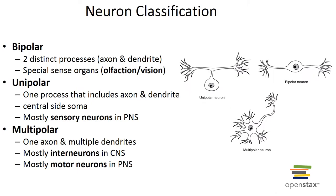There are different types of neuron classification based on structure or the number of cell processes. Bipolar neurons have two cell processes — one dendrite and one axon — and are rare, occurring in the retina of the eye and within the nasal mucosa. Unipolar neurons have dendrites and axon continuous and fused, with the cell body located off to the side; most sensory neurons of the PNS are unipolar. Multipolar neurons have one axon and two or more dendrites — these are the most common neurons of the CNS and all motor neurons that control skeletal muscles are multipolar.